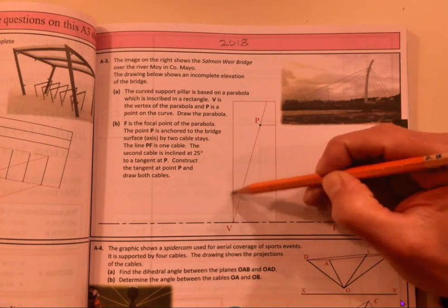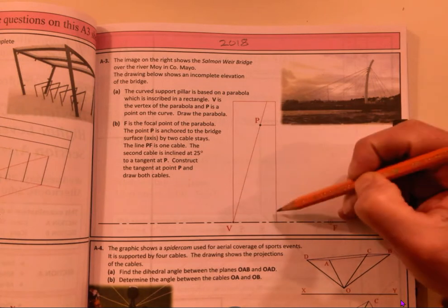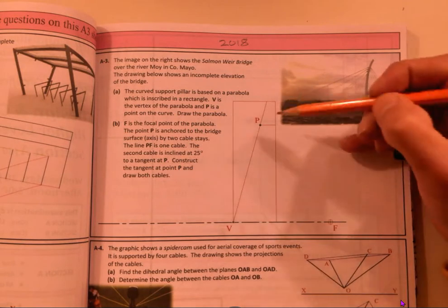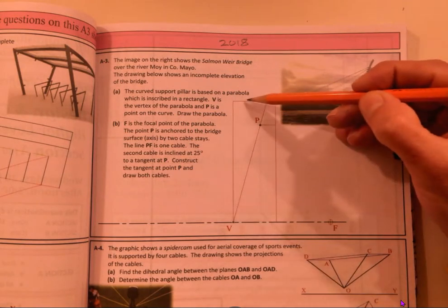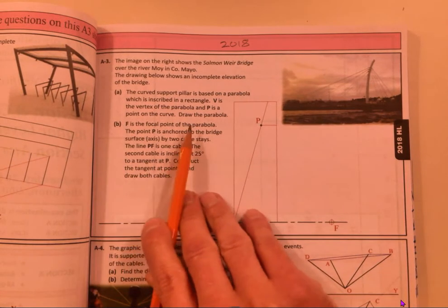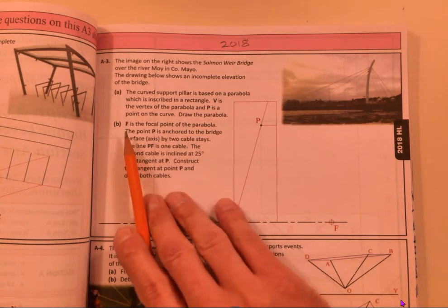In other words, dividing up the long side, divide up the short side maybe into four equal sections or five equal sections. Four is probably enough, and then draw your parabola.